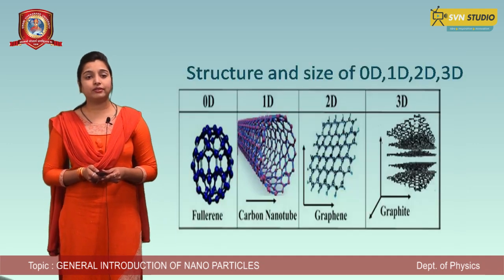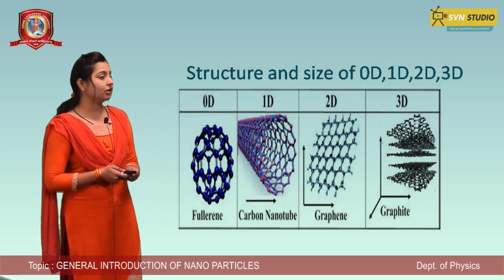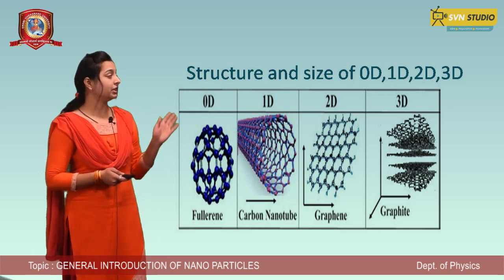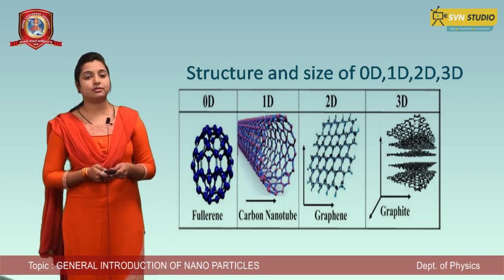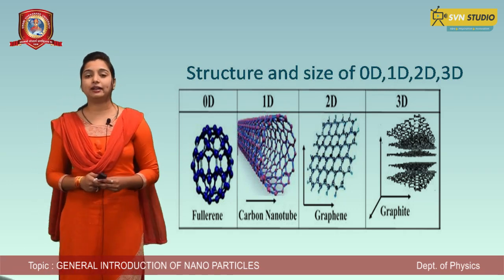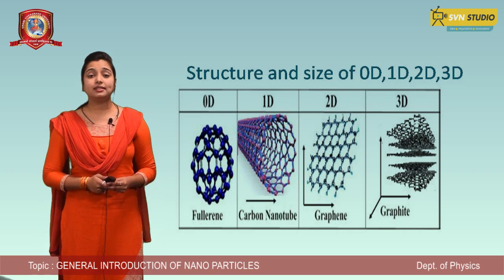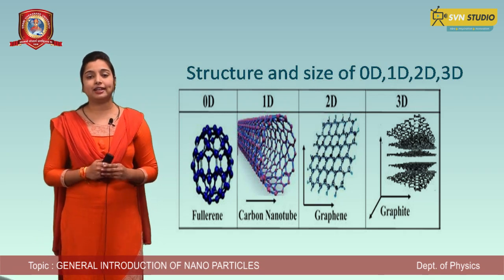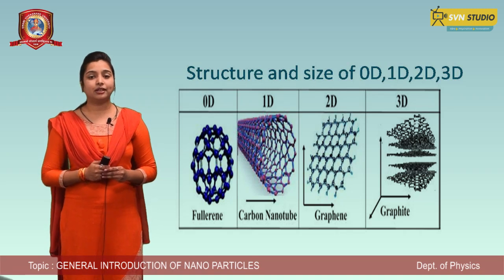Now we will discuss the structure of nanoparticles. Basically, nanoparticles can be found in 0D, 1D, 2D, and 3D structures. In a 0D nanoparticle, D stands for dimension — meaning this is a nanoparticle in which the x, y, and z directions are all zero. It is called a 0D nanoparticle.